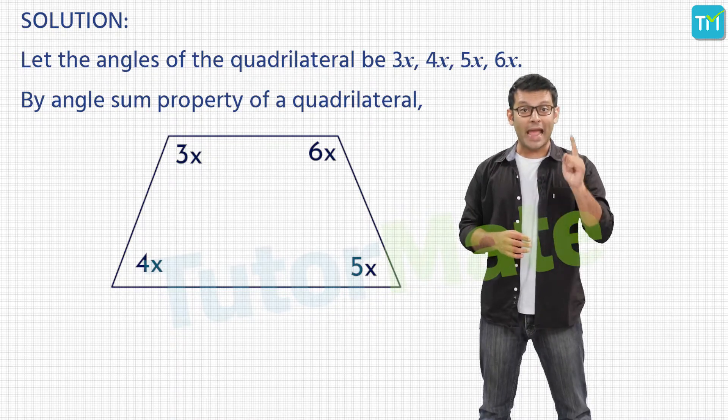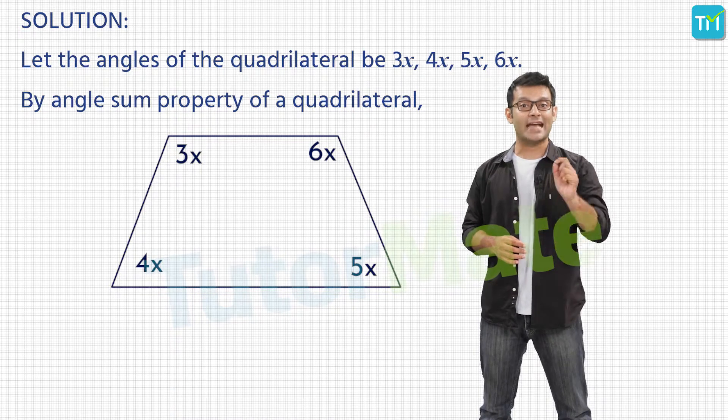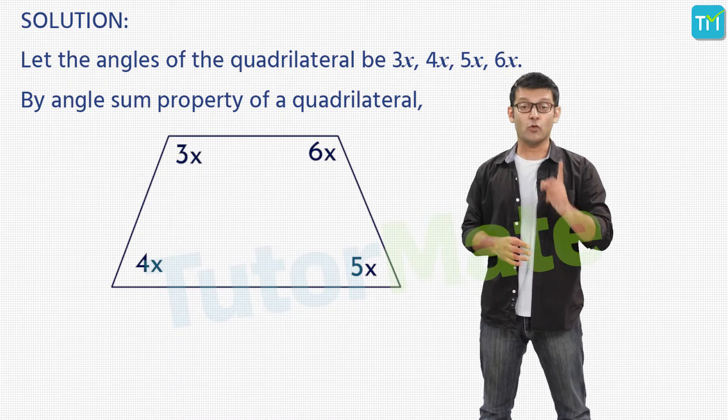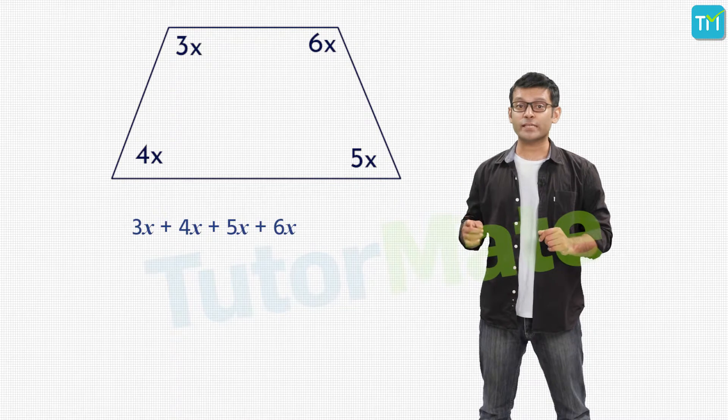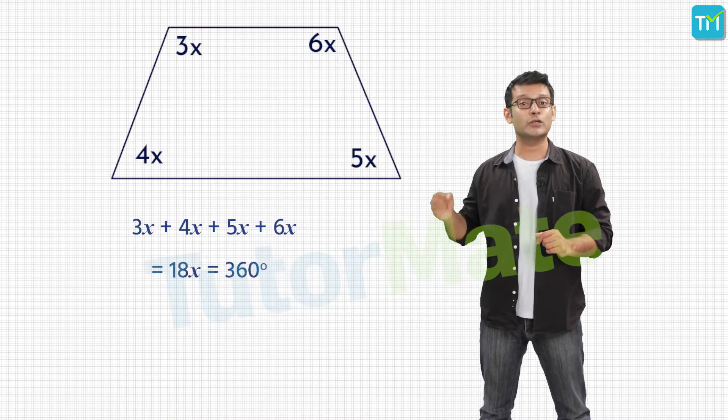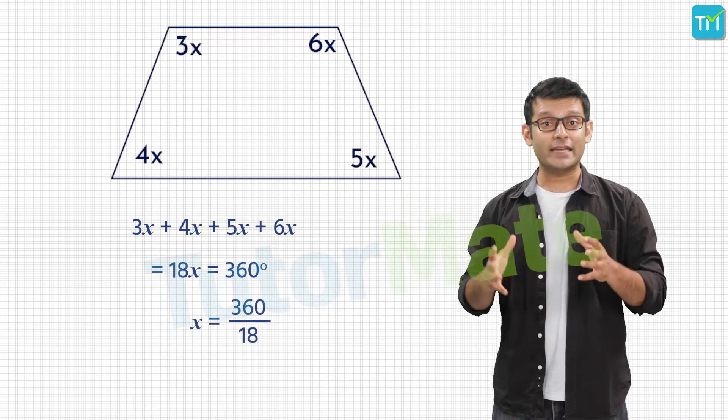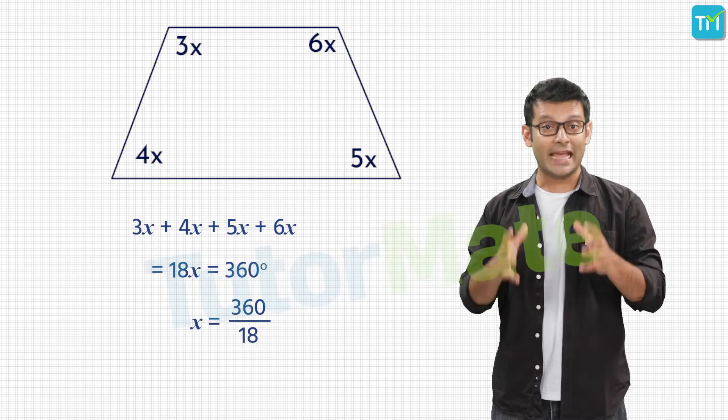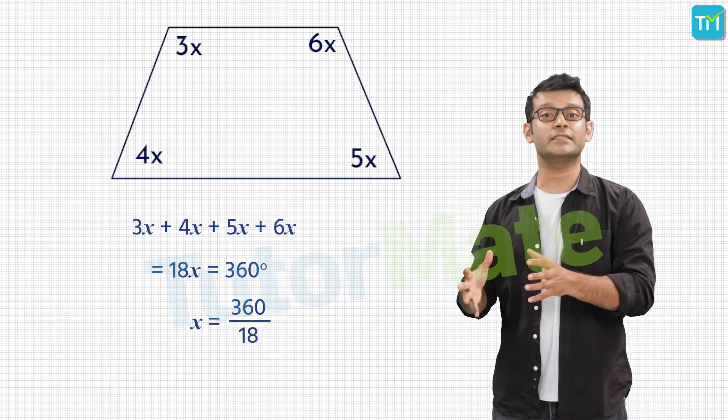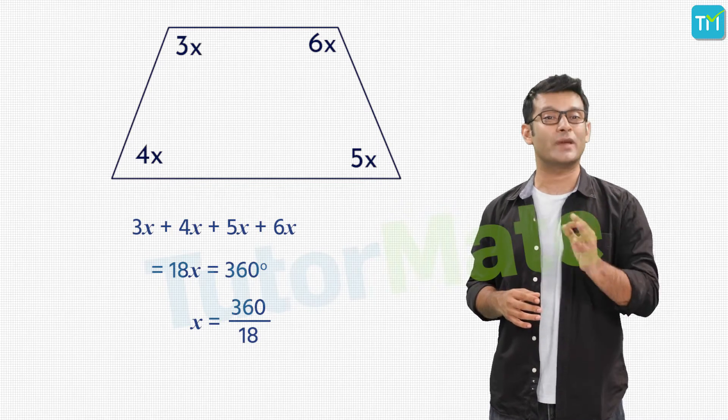So now, by adding these angles, we know we'll get 360 degrees as their sum. Therefore, we get 3x plus 4x plus 5x plus 6x which is 18x and that is equal to 360 degrees. Then, we take 18 to the right hand side of the equation to get x is equal to 360 upon 18 which gives us x is equal to 20.